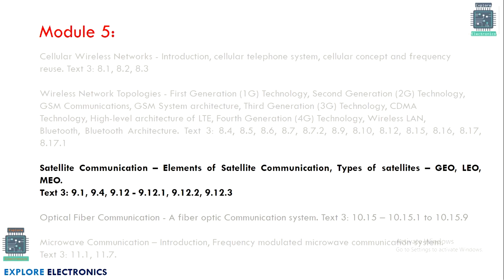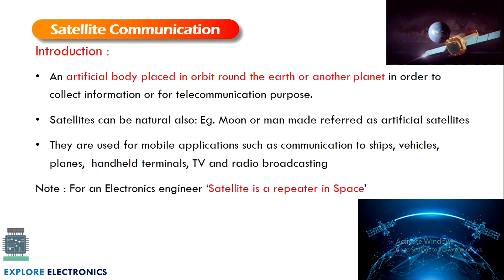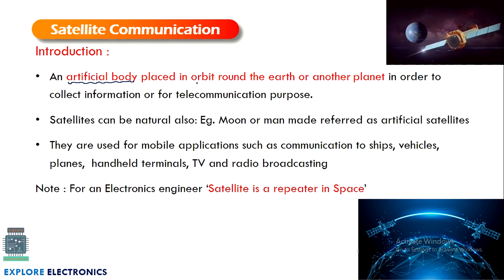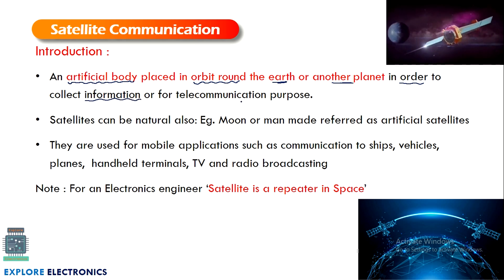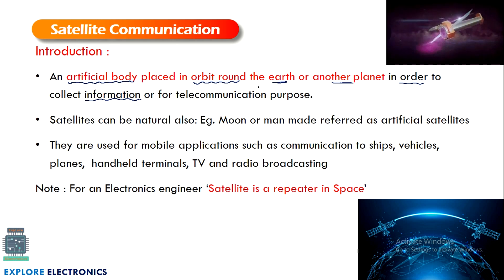Hello everyone, welcome to this video. In this video let us understand satellite communication. We'll go through the elements of satellite communication and types of satellites such as GEO, LEO and MEO satellites. First of all, what is a satellite? A satellite can be defined as an artificial body placed in an orbit around the earth or some other planet, in order to collect information or for telecommunication purposes.